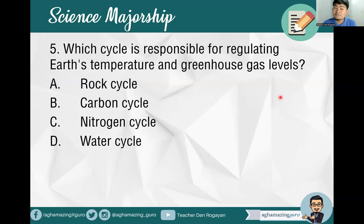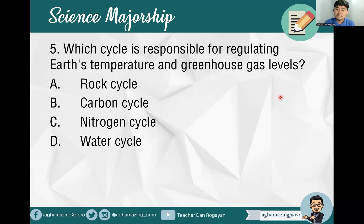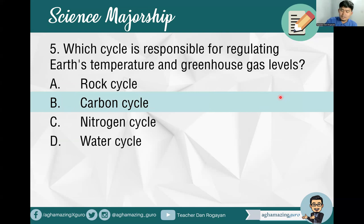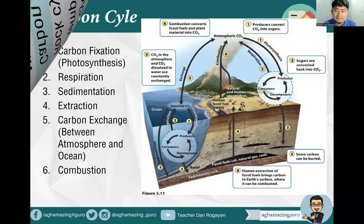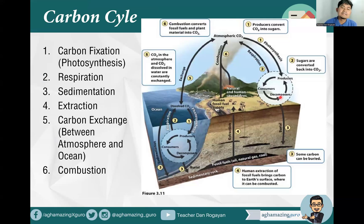Number five: Which cycle is responsible for regulating Earth's temperature and greenhouse gas levels? A, rock cycle. B, carbon cycle. C, nitrogen cycle. D, water cycle. The answer is letter B — the carbon cycle. The carbon cycle is composed of different processes. There are six major processes involved in the carbon cycle.